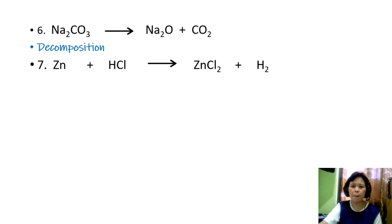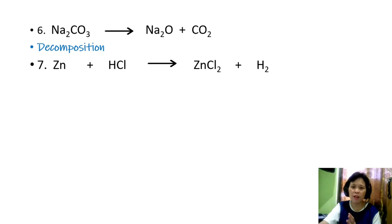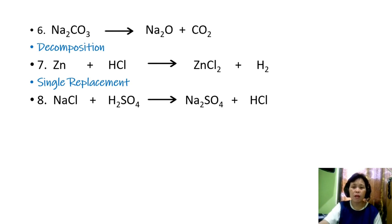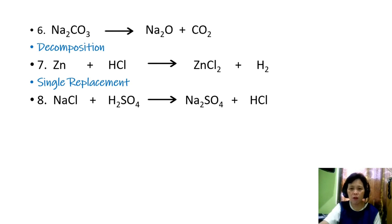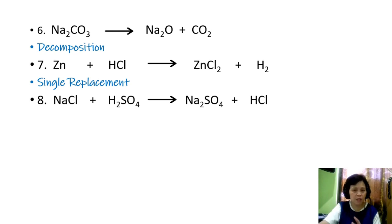Seventh: zinc is all by itself and reacts with a compound, kicking out hydrogen. Zinc ends up paired with chlorine and hydrogen is all by itself — a classic example of single replacement. Eighth: NaCl plus H2SO4 resulting in sodium sulfate and HCl. Two pairs switching partners — Na initially with Cl ends up with SO4, and H initially with SO4 ends up with Cl — this is a double replacement reaction.